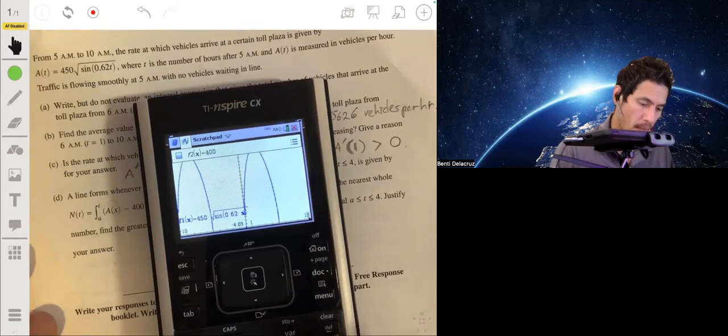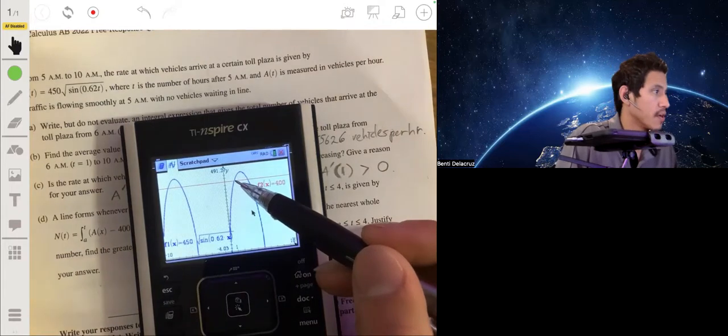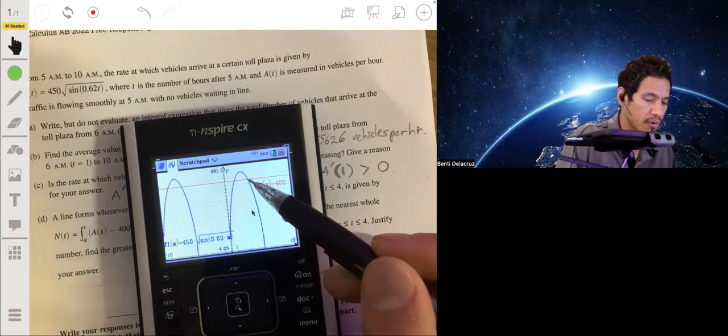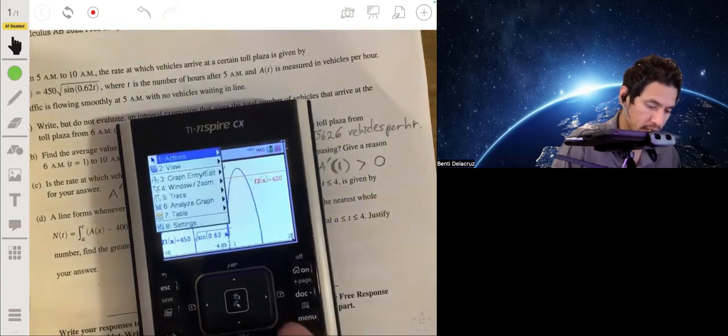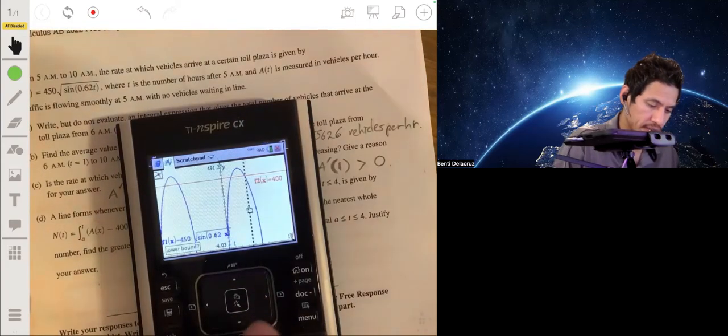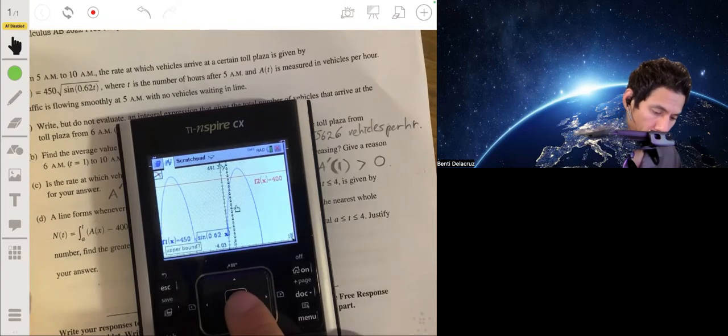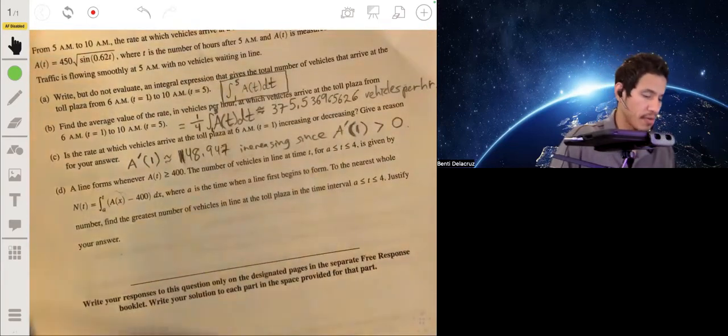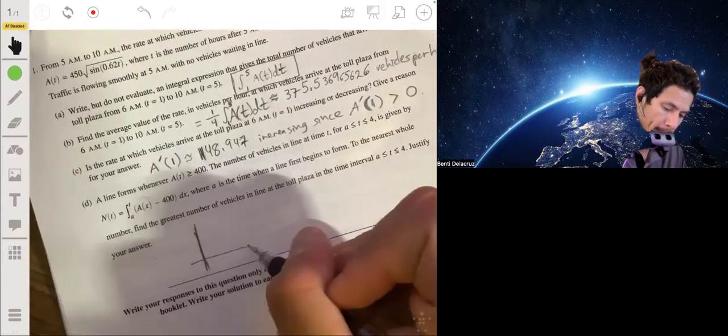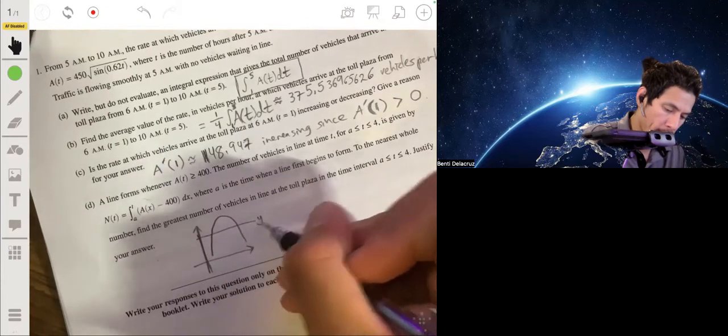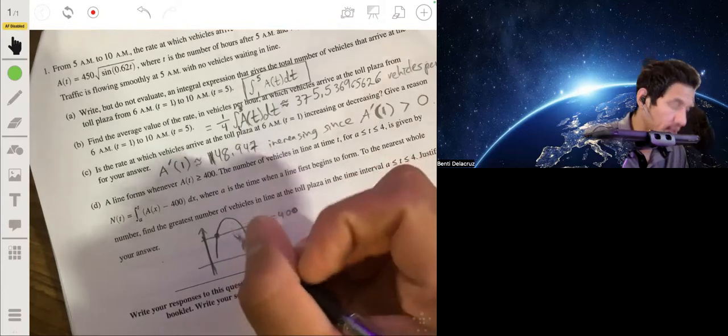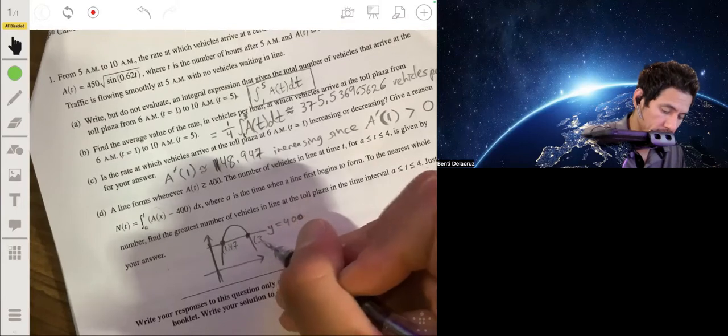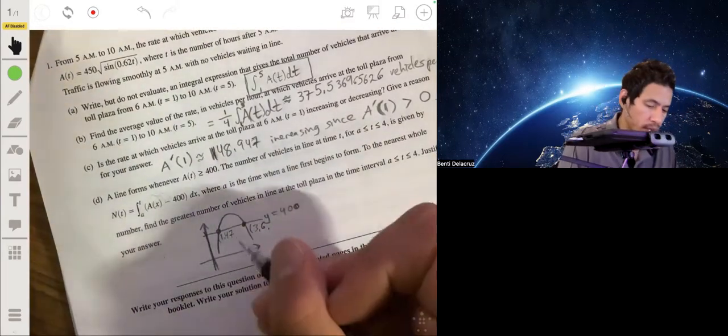So again, we can use the calculator to make your life a lot easier. Let's go ahead. Let's graph our function again, 450 square root of the sine of 0.62x. Interesting graph. Now let's also graph the line y equals 400. So we can just put this equal to 400. Now you can see that there's this region from here to here where our A(t) is above it. And so we want to integrate this portion right here. So we just got to find those endpoints first. Then we can just use our calculator to find that integral. So let's analyze this graph for the intersection.